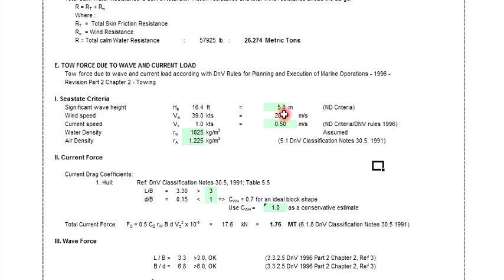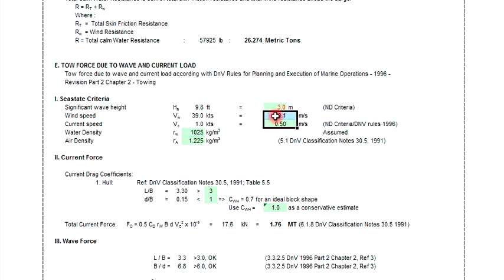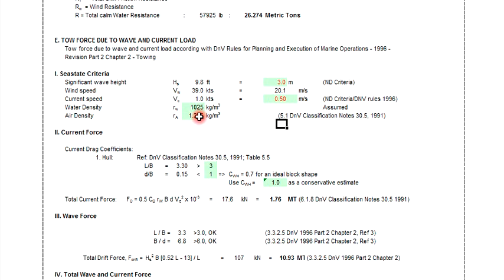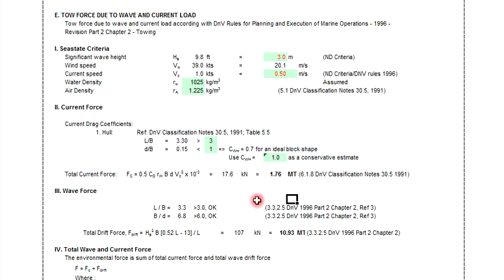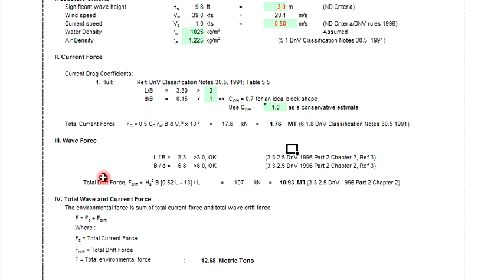The system criteria is based on location. Wave height can be five meters or three meters depending on your site — just change the input here. Wind speed is 13 m/s and current speed and water density are standard values you don't need to change. Based on the DMP classification, with notes 13.5 and 5.5, you can look up the formula from the DMP rules to get the total current force — approximately 1.76 metric tons.